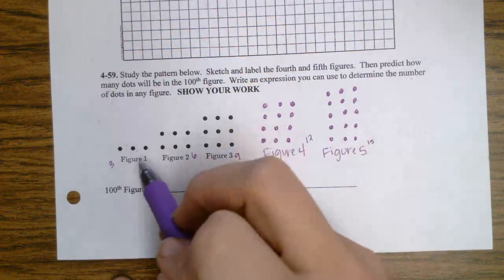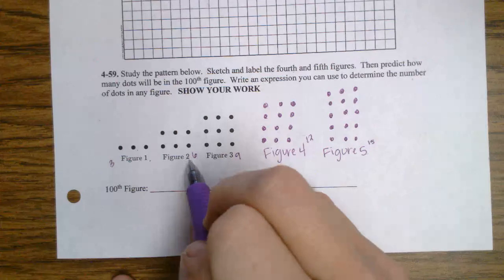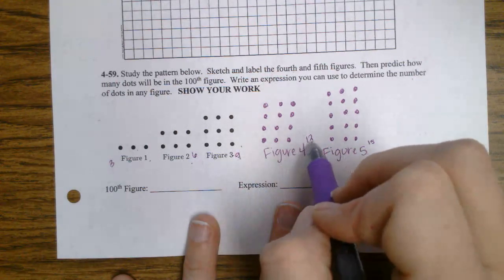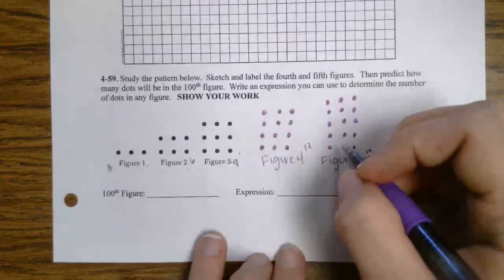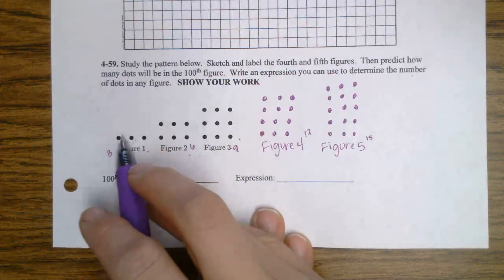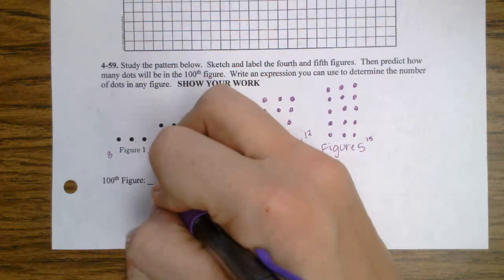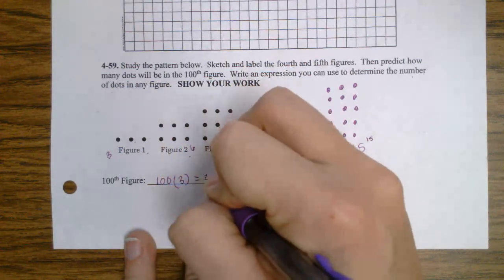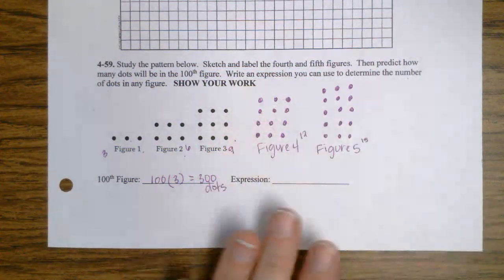The other thing I notice, what's 1 times 3? 3. 2 times 3? 6. 3 times 3 is 9. 4 times 3 is 12. 5 times 3 is 15. So if I take the figure number and I multiply it by what I'm growing by, which is 3, then I'll get the number of dots. So the 100th figure would be, well, it's 100 times 3, which is 300. It would have 300 dots.